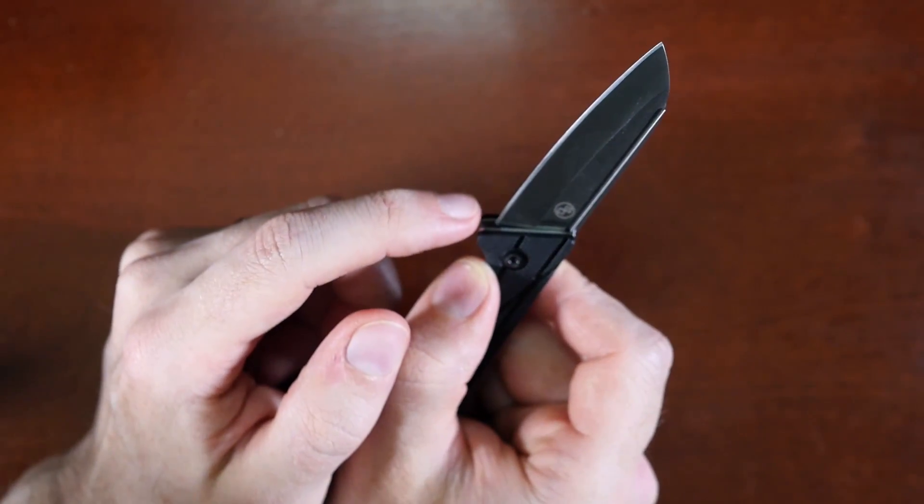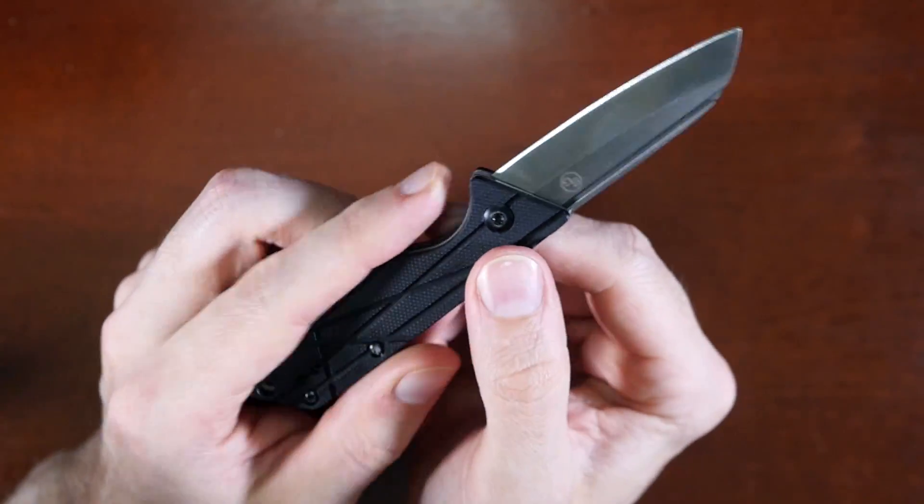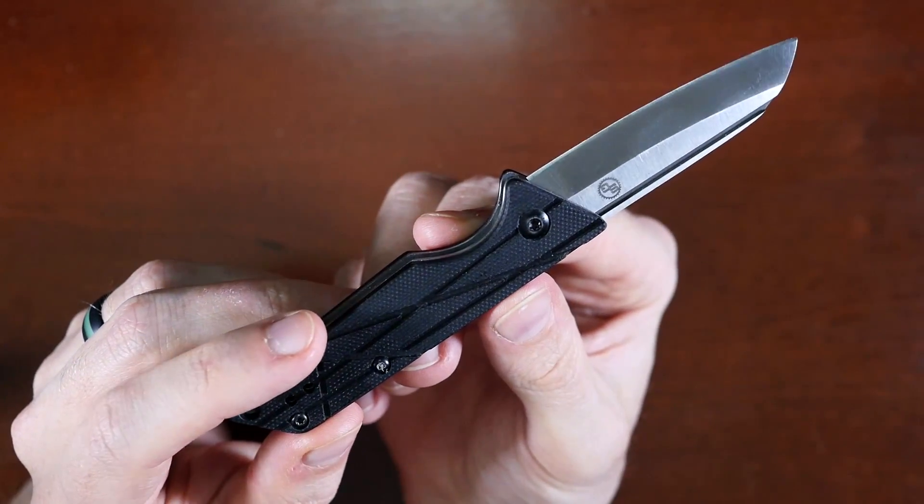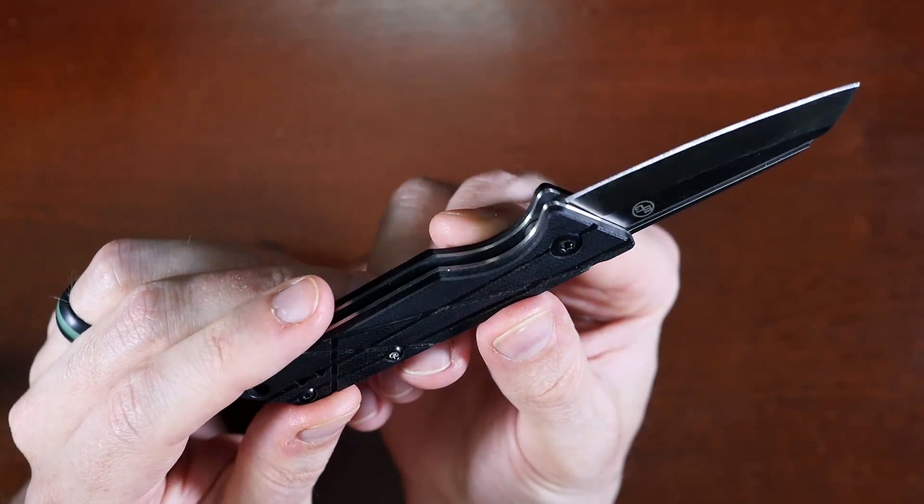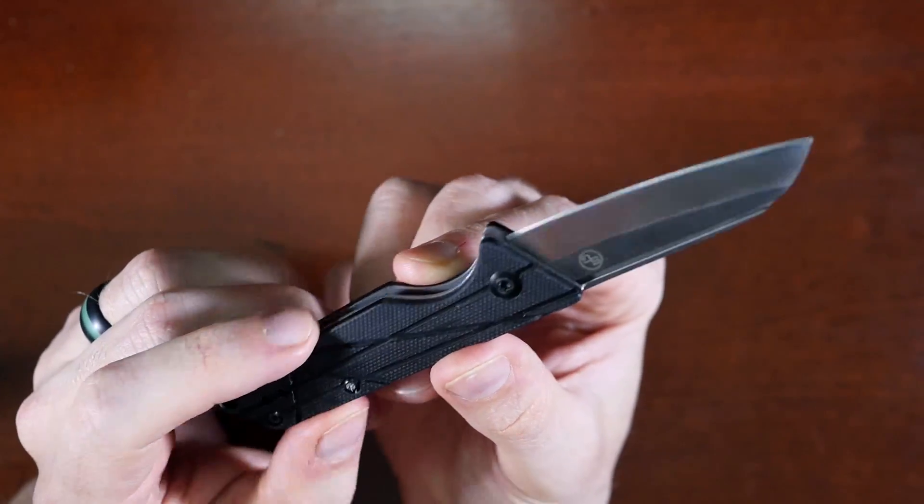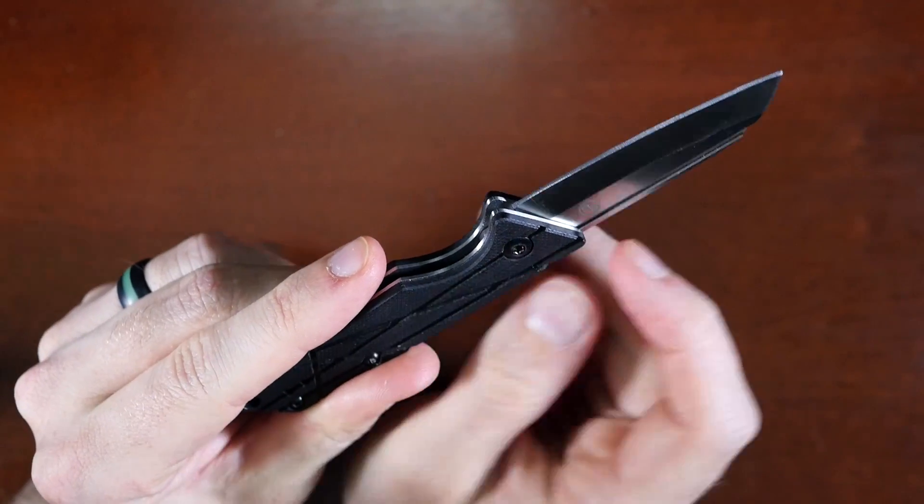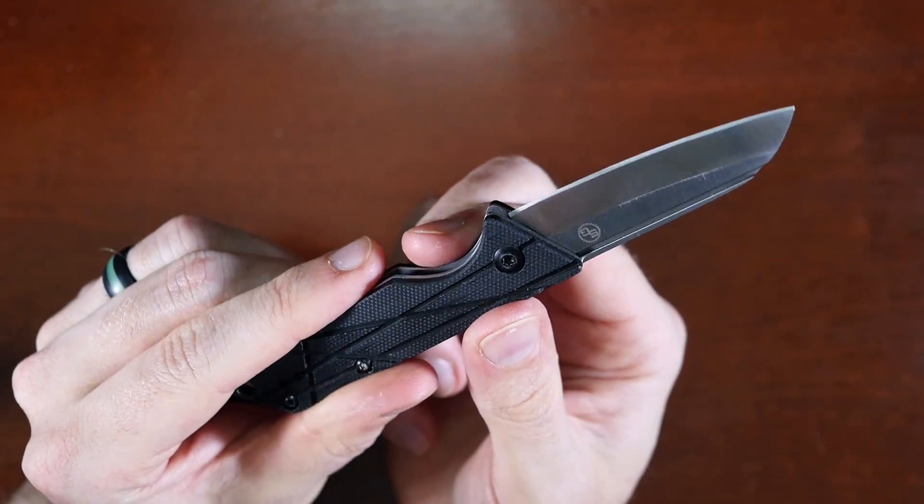Also, when resharpening, it might be difficult to reach the edge all the way down there because you might be bumping into parts of the stone, or ceramic rod, or whatever you're using for sharpening. Although it looks like you could actually remove the blade and then sharpen it outside of the handle.